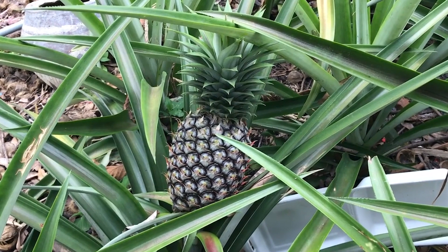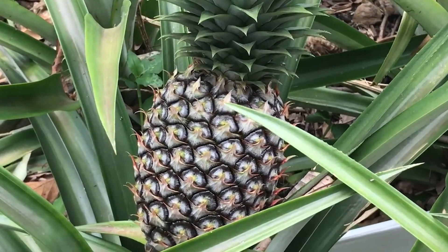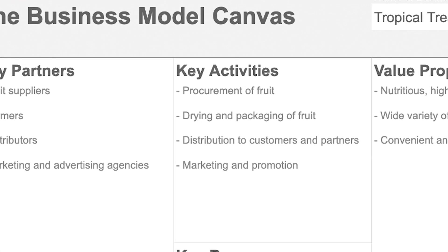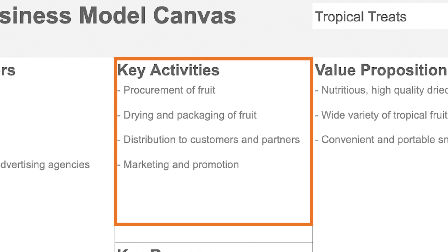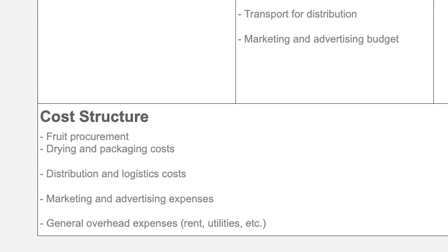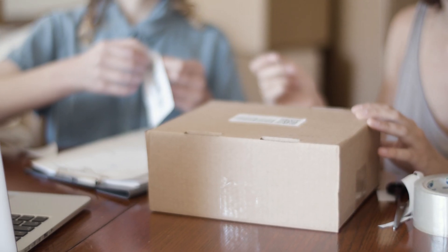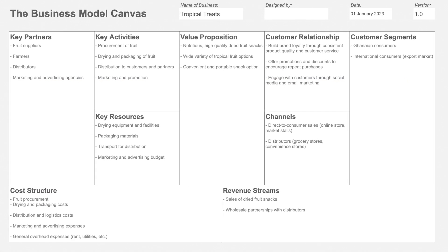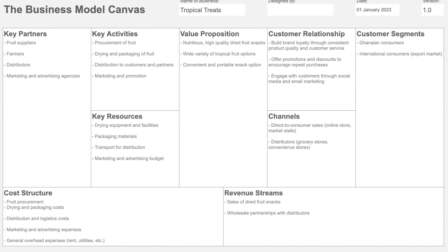Their key partners include fruit suppliers, farmers, and distributors. Their key activities include procuring the fruits they need, drying and packaging the fruits, distribution to customers and partners, and marketing and promotion. Their cost structure includes spending on procuring fruits, drying and packaging, distribution and logistics, and general overhead expenses like rent and utilities.